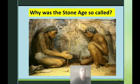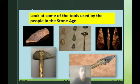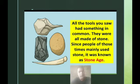Why was Stone Age so called? Look at some of the tools used by the people in the Stone Age. The tools are made of stone. So all the tools had something in common — they were all made of stone. Since people of those times mainly used stone, it was known as Stone Age.